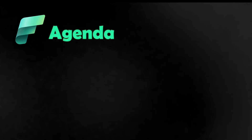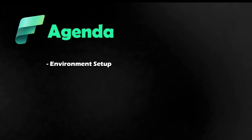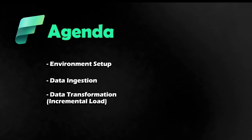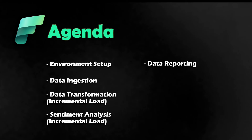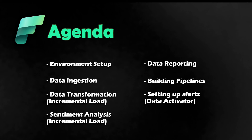Now let's see the agenda for this end-to-end project. First, we'll see about the environment setup — creating the required resources and configurations needed for the project. Then we'll start with the data ingestion, followed by data transformation along with the incremental load. After that, we'll cover sentiment analysis, which also requires the incremental load process. Once finished, we'll see about data reporting using Power BI. After that, we'll build pipelines in Data Factory for orchestration, then set up alerts using Data Activator, and finally we will do an end-to-end test. In this section we've seen the complete overview of the project, and in the next section we will see about the environment setup.